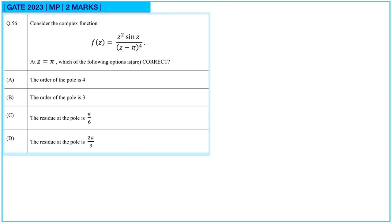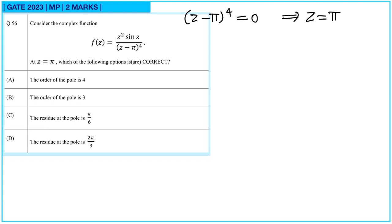Next question. f(z) = z²·sin(z) / (z−π)⁴, and z = π — which one of the following is correct? We can find singular values: setting (z−π)⁴ = 0 gives z = π as the singular point.